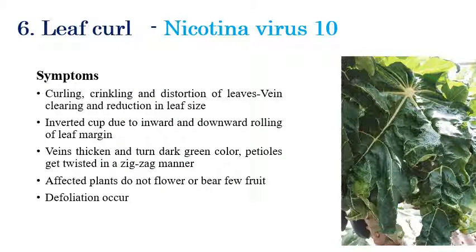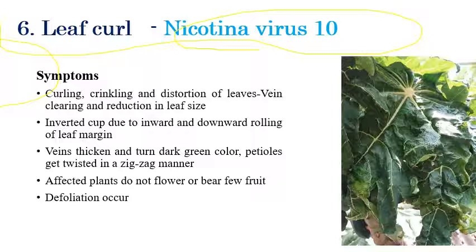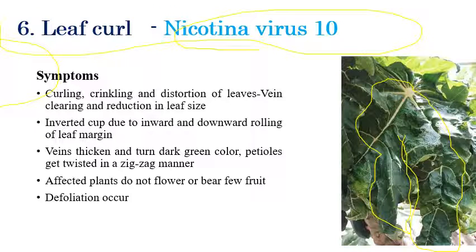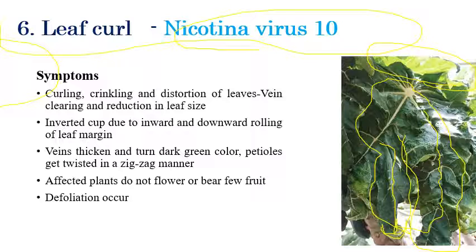The next disease is papaya leaf curl, caused by Tobacco leaf curl virus. As the name indicates, curling of leaves can be seen along with yellowing. Symptoms include curling, crinkling, and distortion of leaves, and downward bending of leaves can be observed. Yellowing of leaves is seen along with curling and crinkling. Affected plants produce no flowers. In later stages, defoliation occurs, the size of the fruit is reduced, and leaves show a zigzag or dirty crinkling pattern.